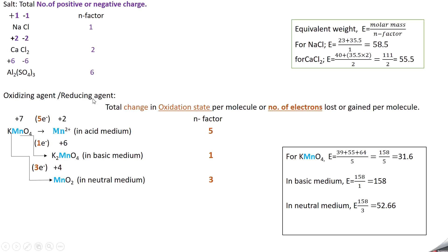For oxidizing and reducing agents, you look at the change in oxidation state per molecule, or the number of electrons lost or gained per molecule — this gives the N factor. For potassium permanganate in acid medium, it gives Mn²⁺. Mn starts at +7 (since K is +1 and 4 oxygens give −8, total must equal 0). The change from +7 to +2 is 5, so N factor is 5.